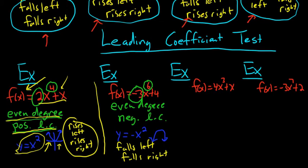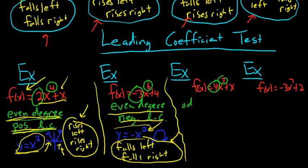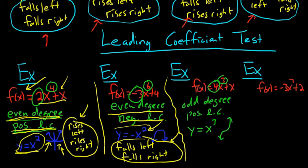You could memorize the rules directly — even degree, positive leading coefficient gives rises left and rises right — but if you memorize these pictures instead, you not only know the leading coefficient test but also what these functions look like, which is far more useful for math. For f(x) = 4x³ + x, we have odd degree and positive leading coefficient. The simplest example is y = x³. So the end behavior is falls left, rises right.